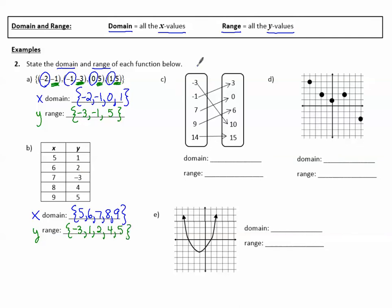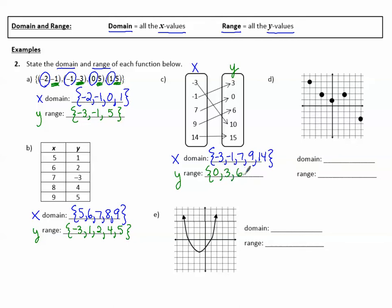Example C: the input is x, and x comes first, so this is the domain. The domain is: negative 3, negative 1, 7, 9, and 14. The range is the y, and y is the output. Listing these in order from least to greatest: 0, 3, 6, 10, and 15.